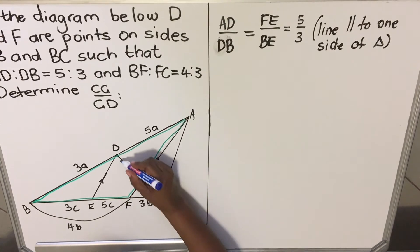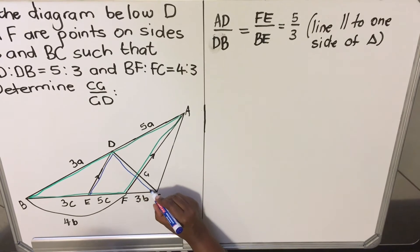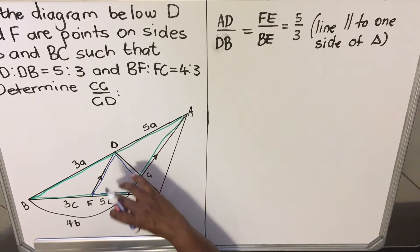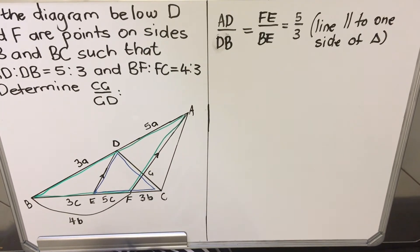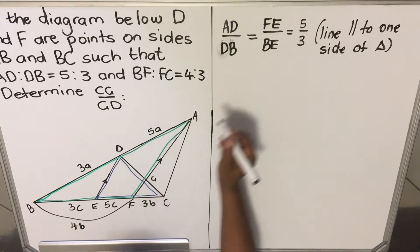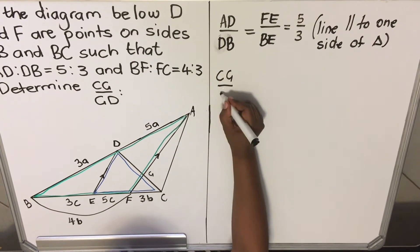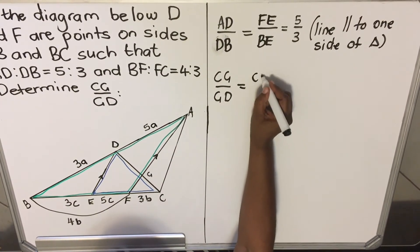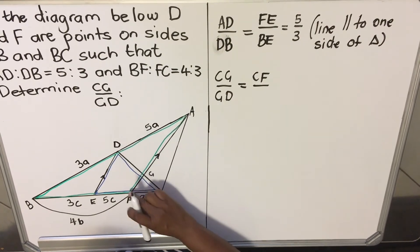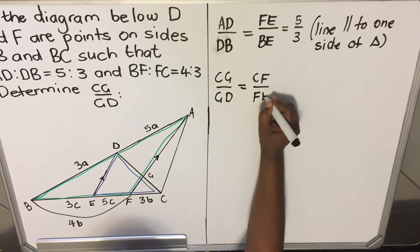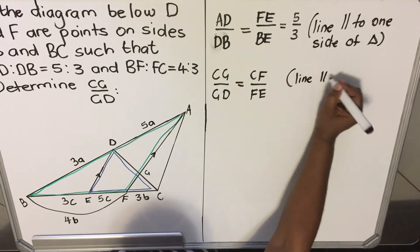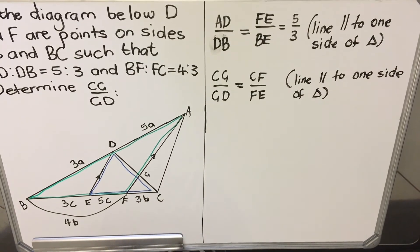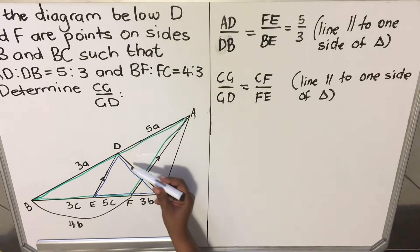CG over GD — do you see this triangle here? Fortunately for us, this triangle also has parallel lines. You can only use the theorem 'line parallel to one side of a triangle' if you have a triangle that has parallel lines — this line is parallel to that one. So CG over GD equals CF over FE, and my reason is: line parallel to one side of triangle.